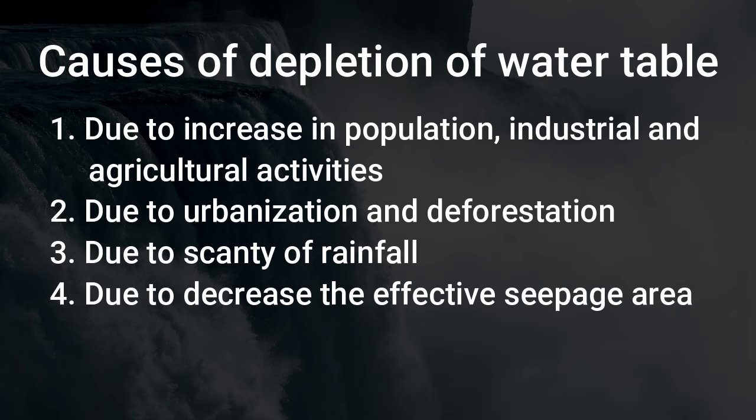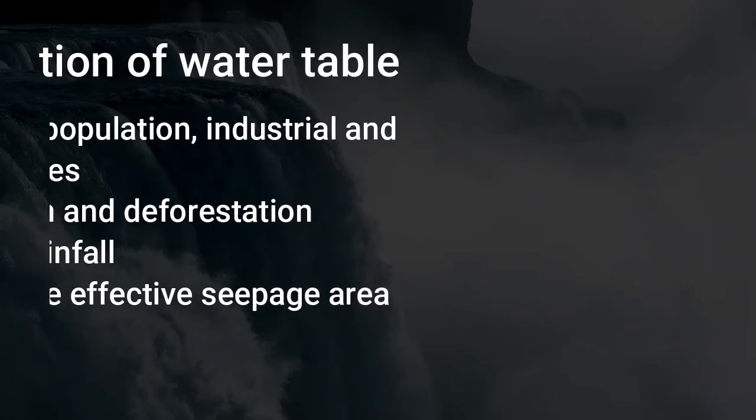And fourth important point. Decrease in the effective area for seepage of rainwater. Because if it is not available, how can groundwater raise their water level? So these are the important reasons due to which the level of water becomes down.